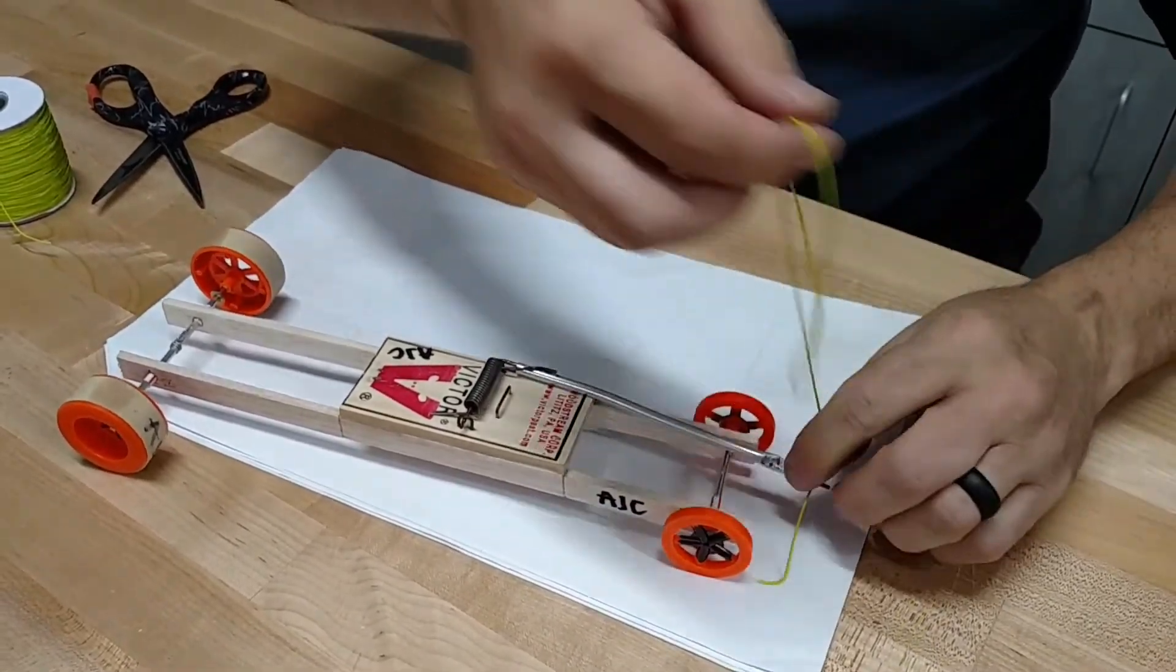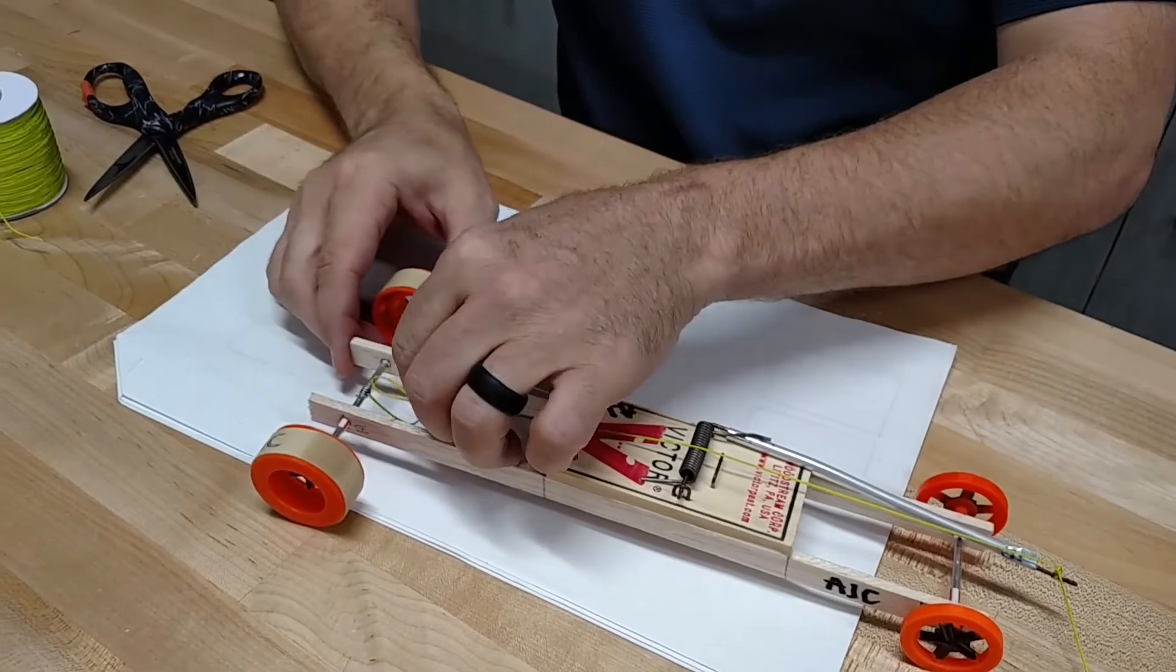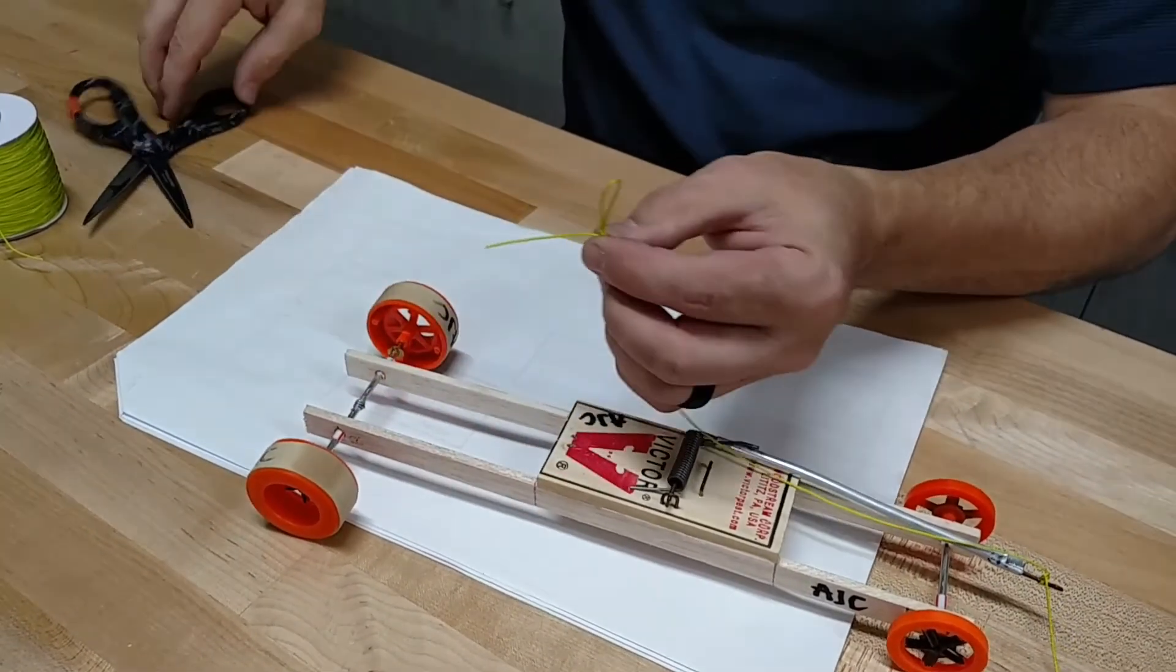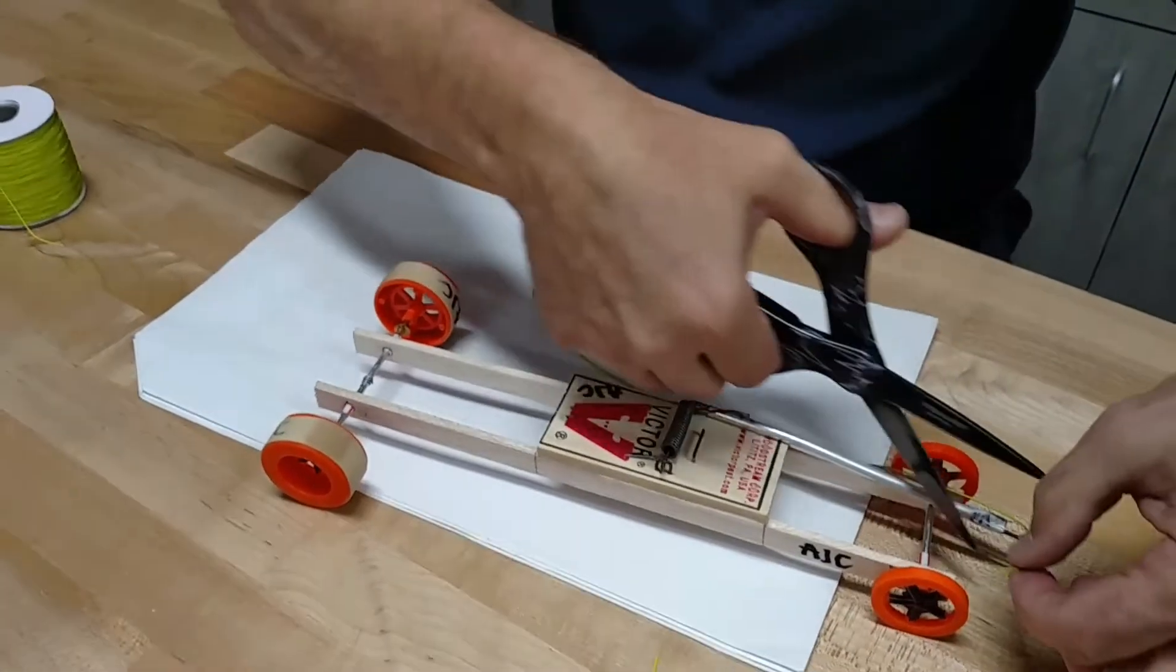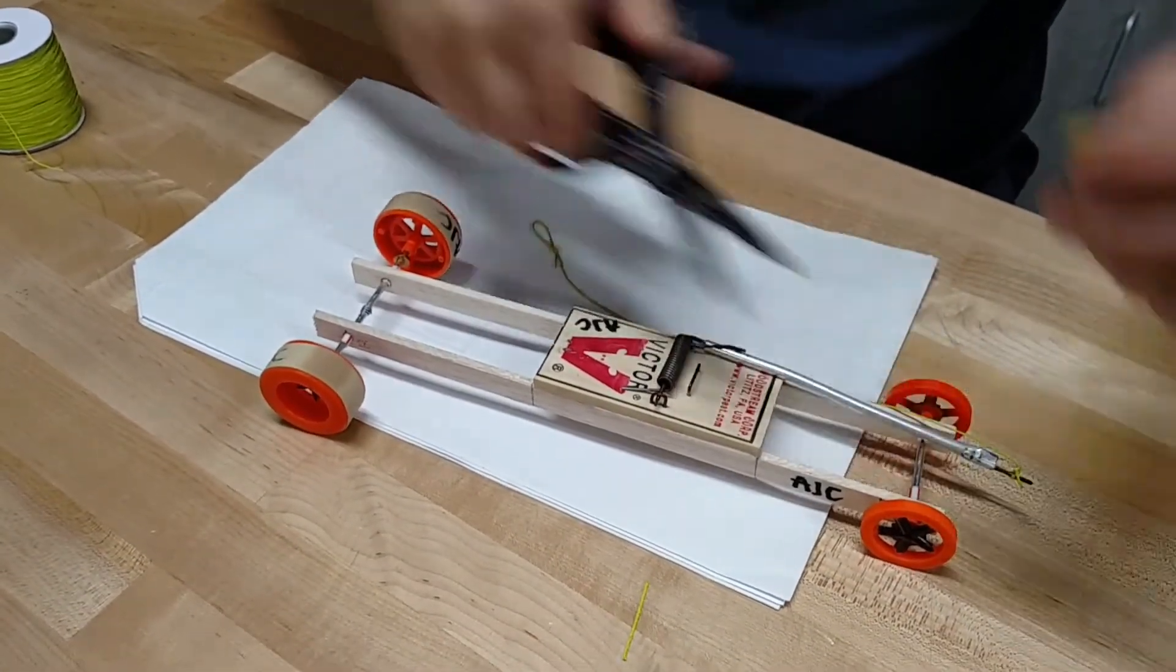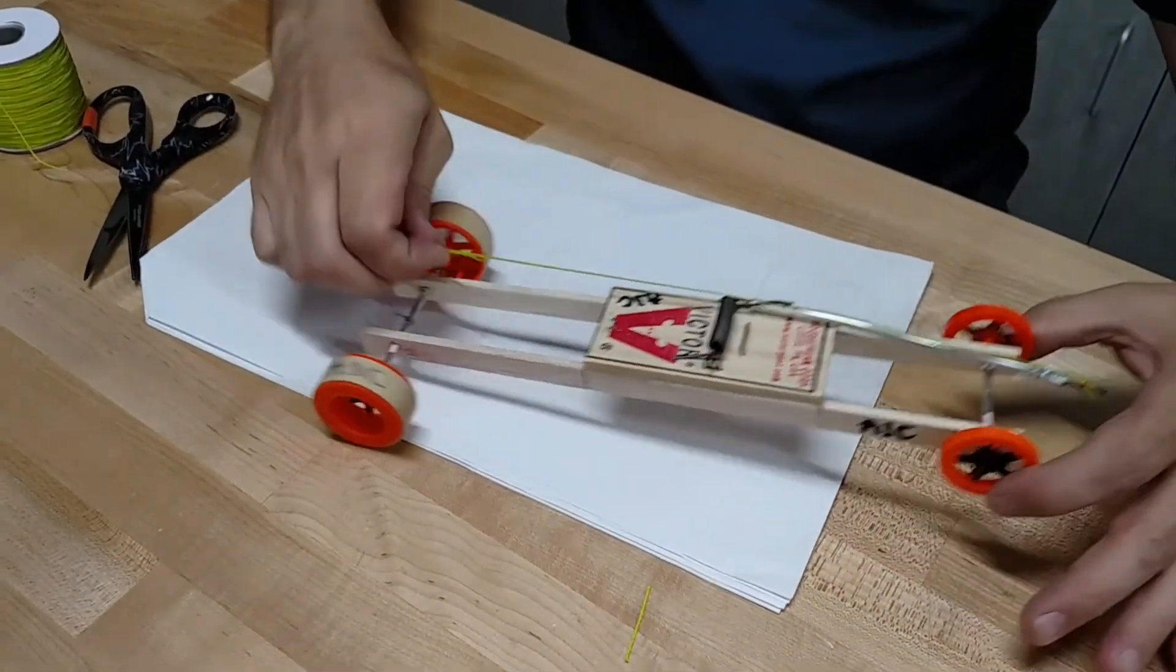Now I should have a string that reaches just back to the axle, and that's perfect. Then I can cut off the little excess there. A little excess there. And I'm good to go.